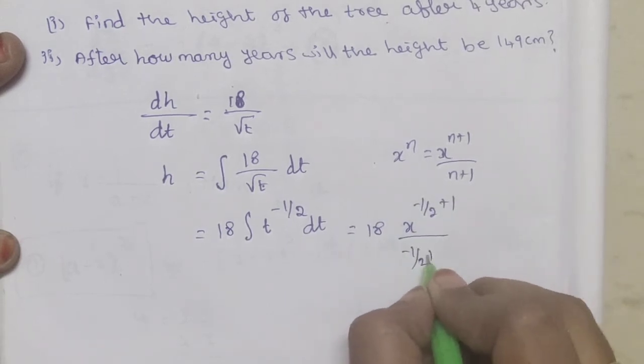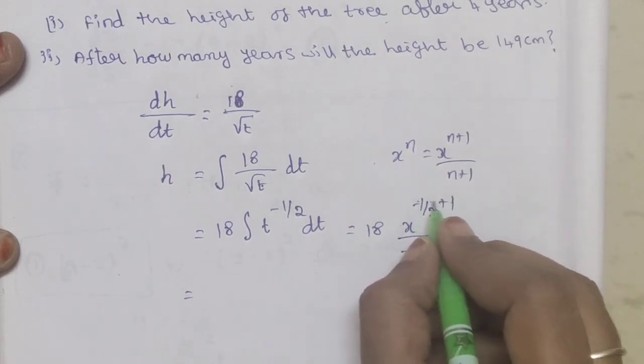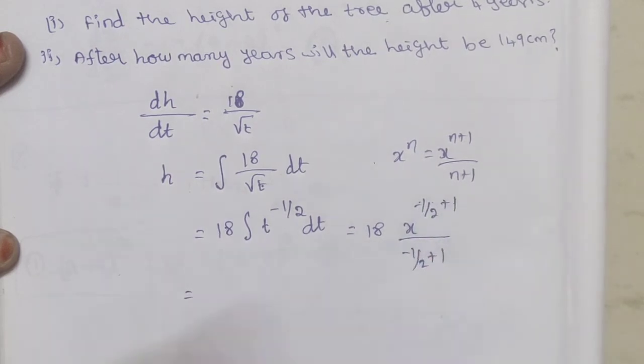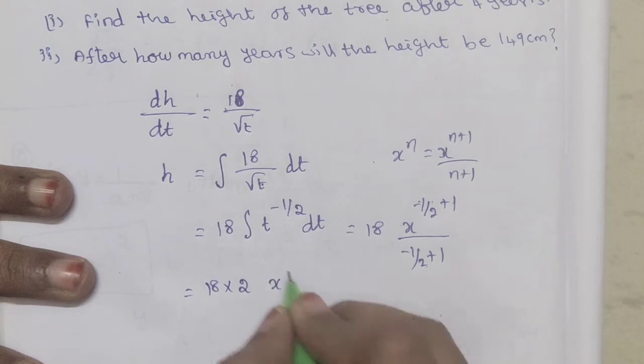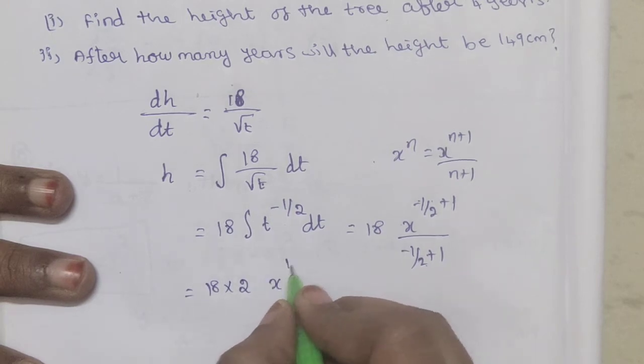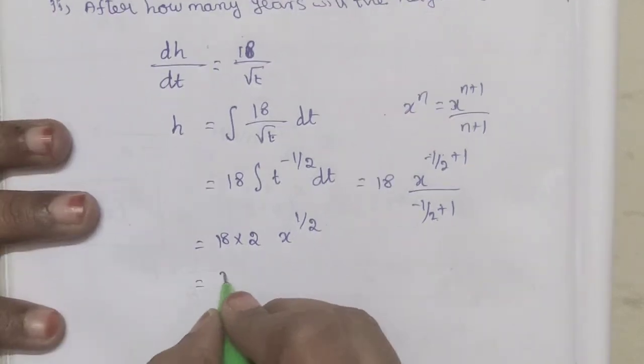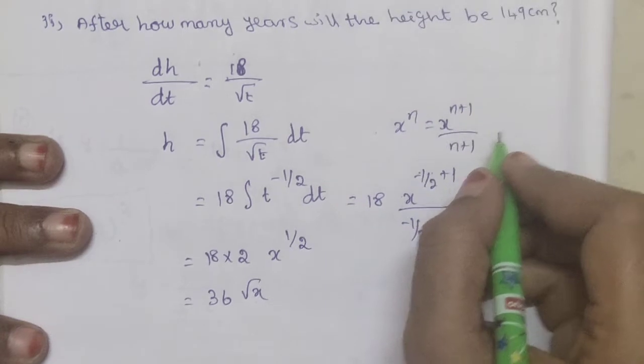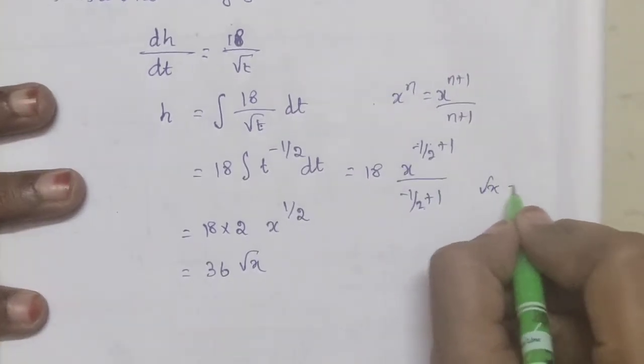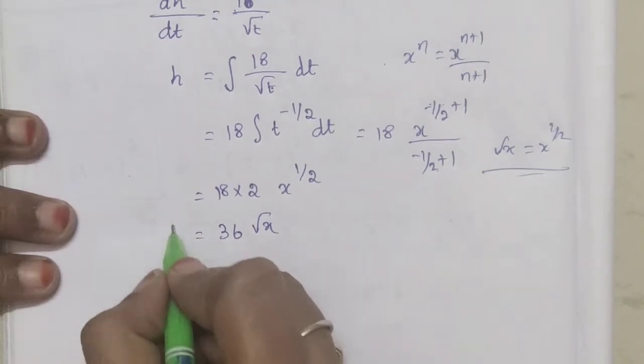Integrating dh/dt equals 18/√t, we get h equals integral of 18/√t dt, which equals 18 times 2 times t^(1/2), so this is 36√t.